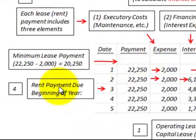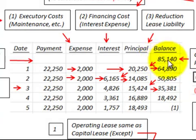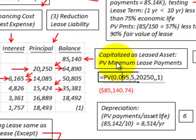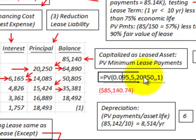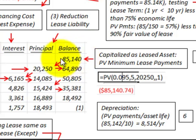So $20,250 is what our principal amount starts at on this lease. The rent payments are due at the beginning of each year. We calculate the capitalized present value of the minimum lease payments by taking those $20,250 minimum lease payments — after the expenses were subtracted out — and discounting them back at the nine-and-a-half percent interest rate. We get a present value of $85,140, which is the capitalized amount of the leased asset used in our amortization schedule.